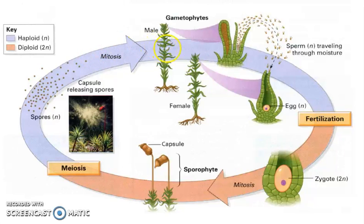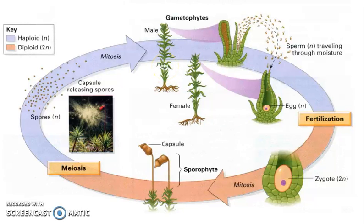Usually when we see moss, we will see it look like this — obviously it would be in a big large carpet-type material. They're not very tall, and they actually have male and female type plants.